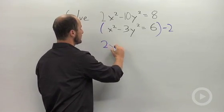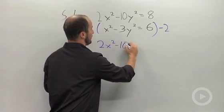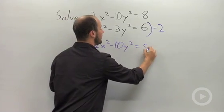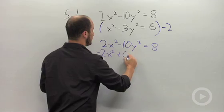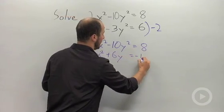So the top equation stays the same and the bottom equation now turns into negative 2x squared plus 6y squared equals negative 12.